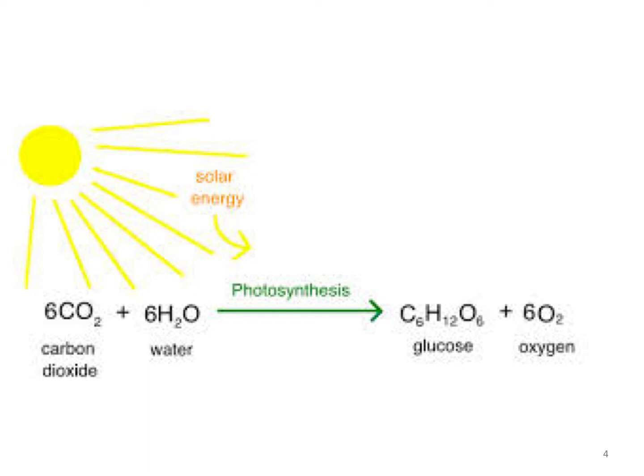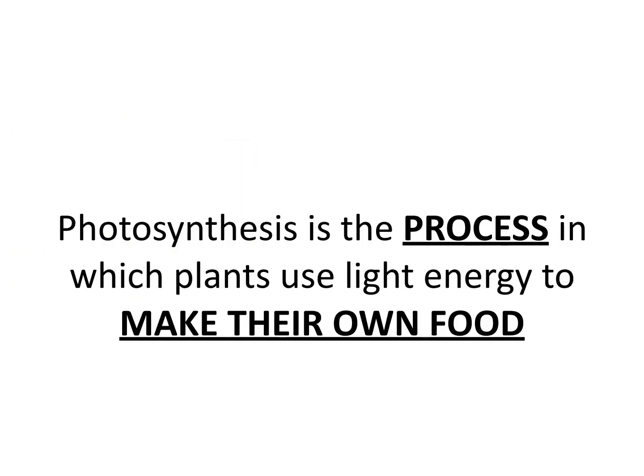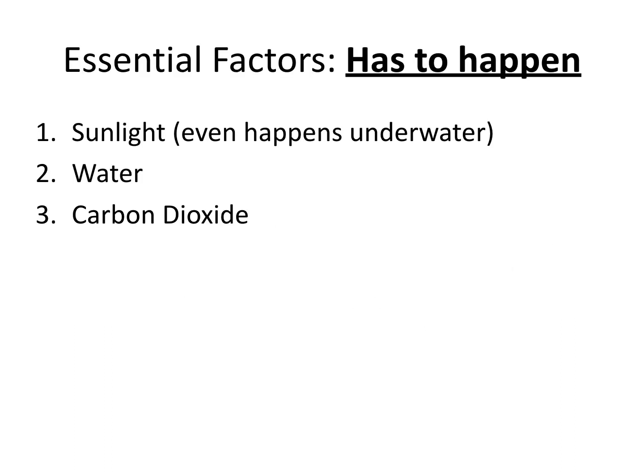I use this formula just so you can relate how it does work. You don't need to know the formula by heart, but you do need to know the ingredients. Photosynthesis is basically the process in which plants use light energy to make their own food. That's why we broke down the word in those boxes about combining light — because this is what the process is all about. Below, I have essential factors, and if you don't know what essential factors means, these are things that have to happen — without these, you can't have the rest.